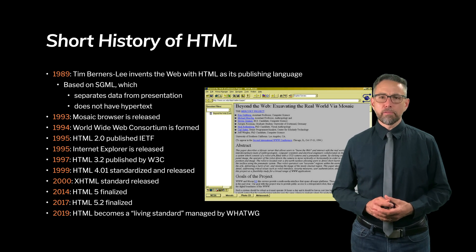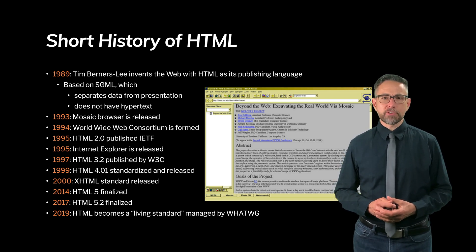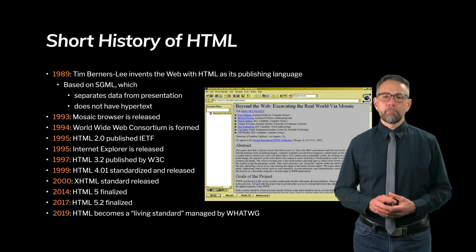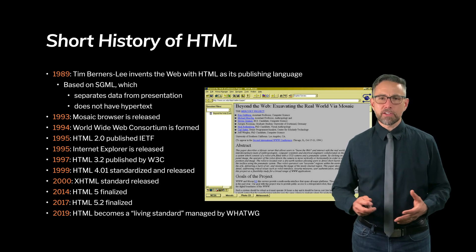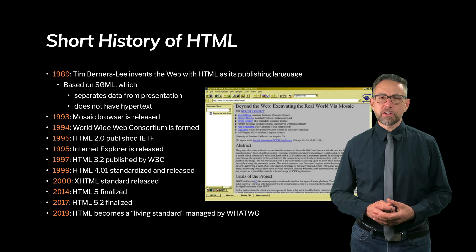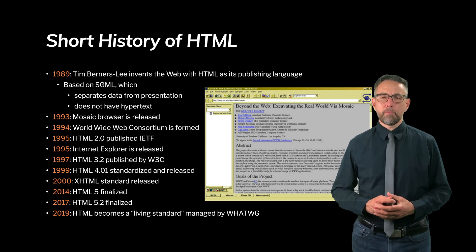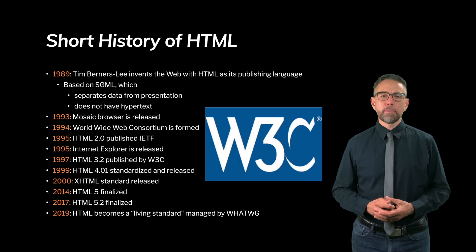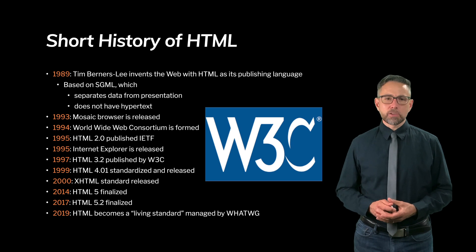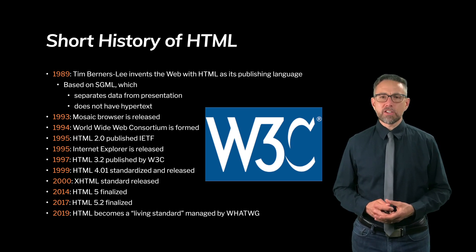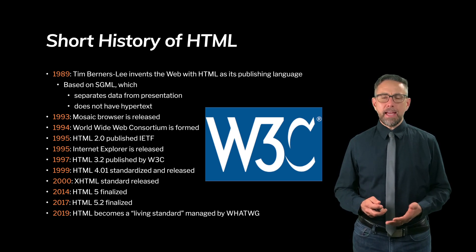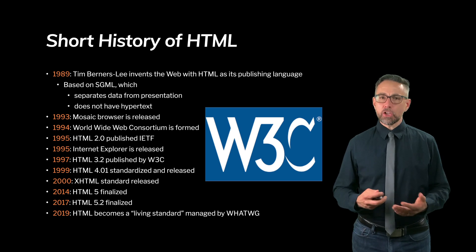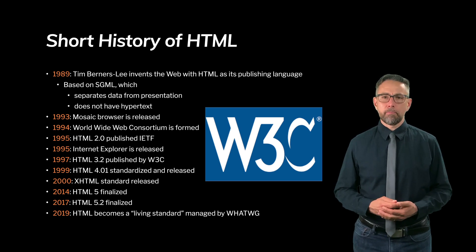In 1993, one of the first browsers was developed — the Mosaic browser. Here's a screenshot of what it looked like. The fonts aren't beautiful and the interface looks like it's from 1993. Mosaic eventually became Netscape and found its way into Firefox over time. Shortly after, in 1994, the World Wide Web Consortium was formed — the organization responsible for defining the languages and syntaxes used in web languages we use every day.